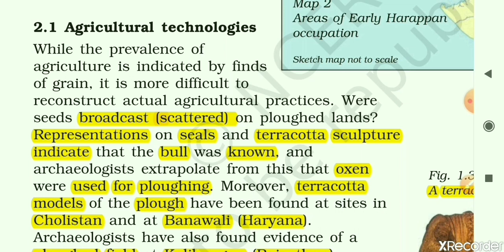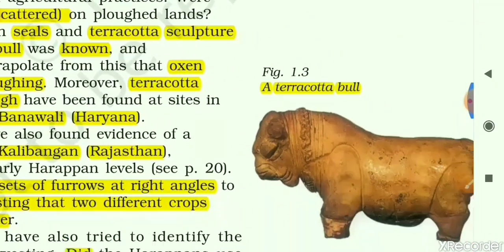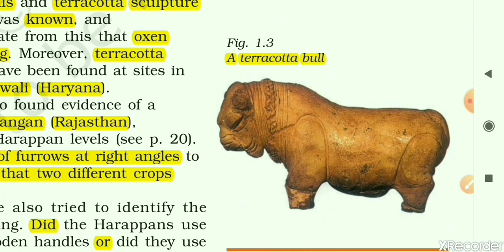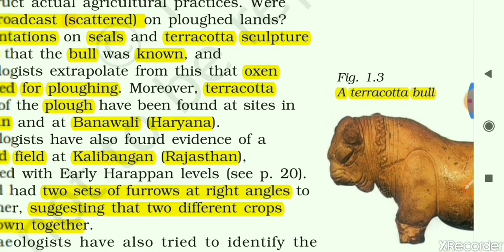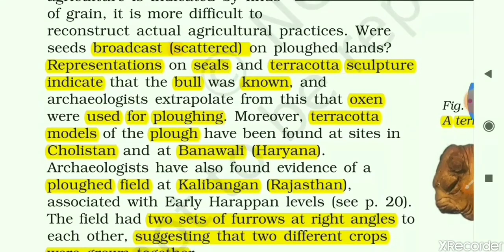Representations on seals and terracotta sculptures indicate that the bull was known to the Harappan people. Here is a picture of a terracotta bull. It is also assumed that archaeologists extrapolate or assume that the ox was used for ploughing.